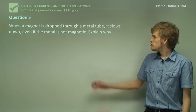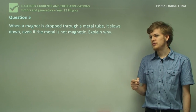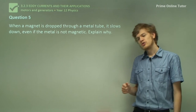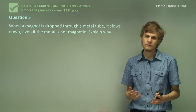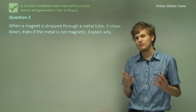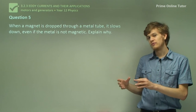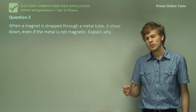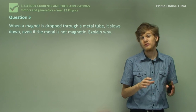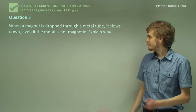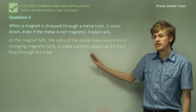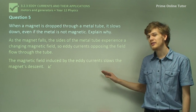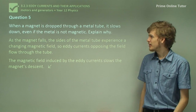Question 5: When a magnet is dropped through a metal tube, it slows down, even if the metal is not magnetic. Explain why. This is a very fun little experiment to do. As the magnet falls through the metal tube, the sides of the metal tube experience a changing magnetic field, so a current will flow in circles around the tube — eddy currents. These currents produce a magnetic field that resists the motion of the magnet. So the magnetic field induced by the eddy currents slows down the magnet as it falls through the tube.